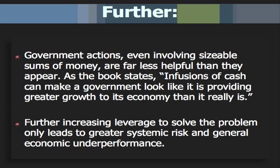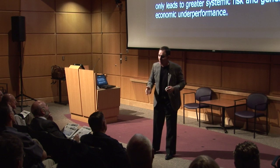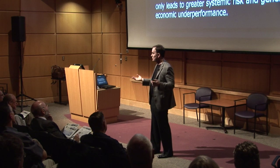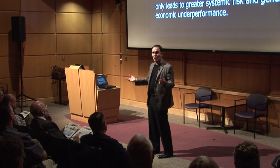Increasing leverage to solve the problem only leads to greater systemic risk and general economic underemployment. Pity the Greeks — they dug their own hole. So what does Europe and the IMF want them to do? Borrow more money. They're going to borrow more money and reduce government spending. If you reduce government spending in the short term, it's going to reduce GDP. So in their march to austerity, they're going to reduce their GDP, go negative on it, which makes their debt-to-GDP ratio worse — which is what got them in trouble to begin with. They're in a death spiral.